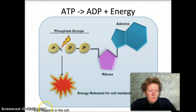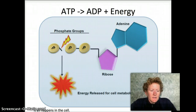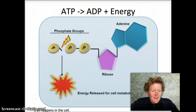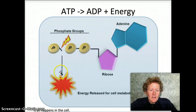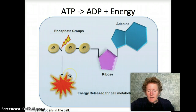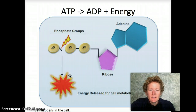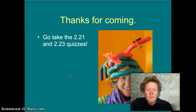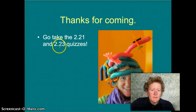Glucose gets delivered to your cells, and then ATP is made in the cells from a process called glycolysis and a bunch of other processes too. It's complicated, but let's just talk about how important ATP is for making your cell run. It's the energy currency of the cell — it's how you get things done in a cell. Now you know everything you need to know to take the 221 quiz and the 223 quiz. Thanks for listening!